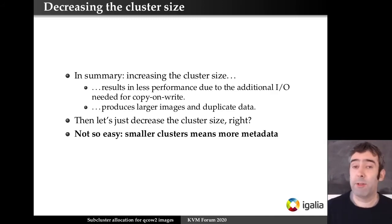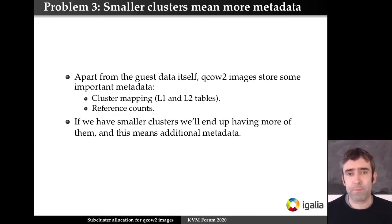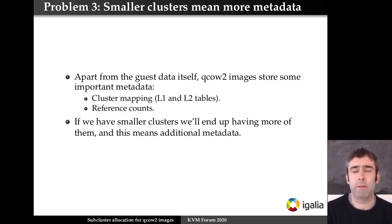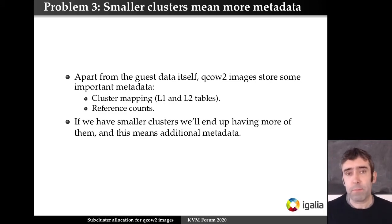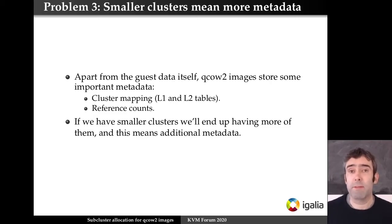So why not just reduce the cluster size? The problem is it's not so easy, because smaller clusters means more metadata and more clusters overall. Apart from the guest data itself, QCow2 images also need to store metadata about the clusters — importantly, the cluster mappings which map guest addresses to host addresses, and reference counts. If we're going to have more clusters, we have more of those, so it means more metadata.